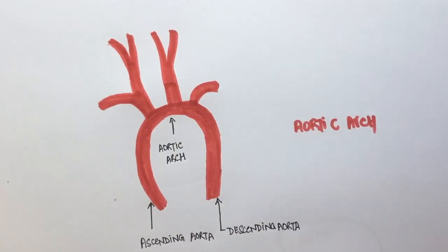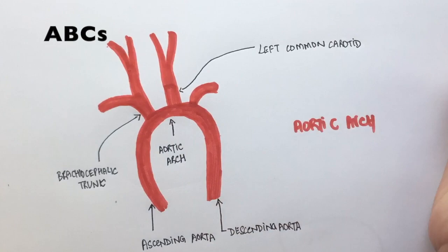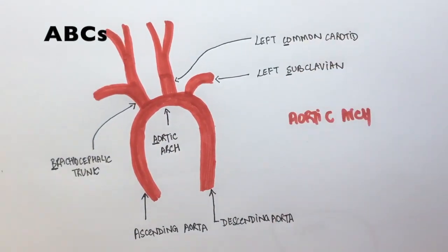The branches of the aorta are as simple as the ABCs, quite literally. A stands for the aorta, B stands for the brachiocephalic trunk, C stands for common carotid artery, and S is the left subclavian artery.